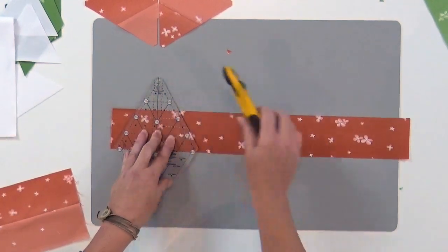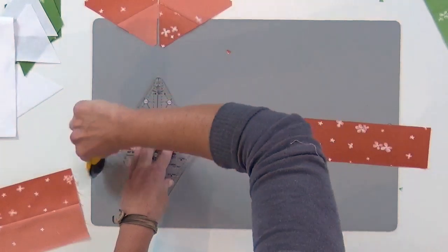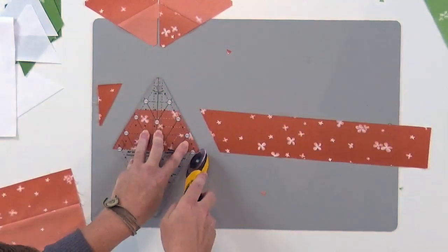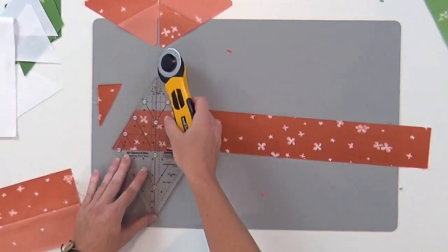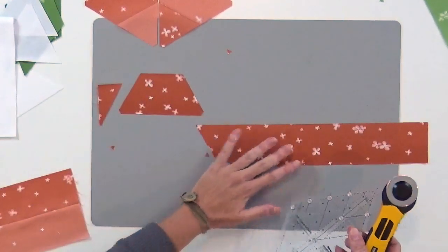I'm just going to cut here and here and there again. Any time I can remove those little flat tips that helps with the piecing. There's a trapezoid.